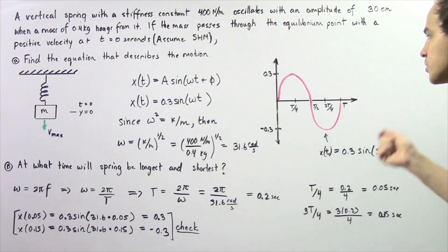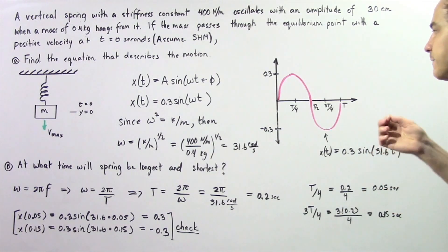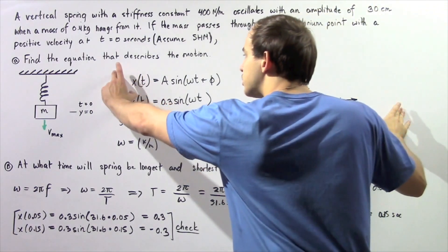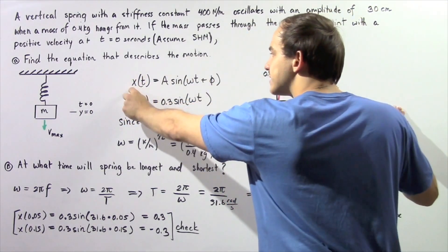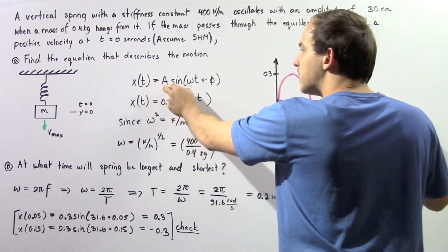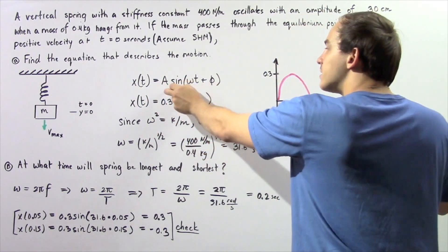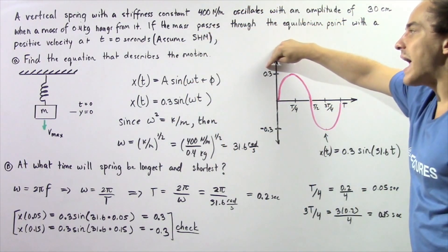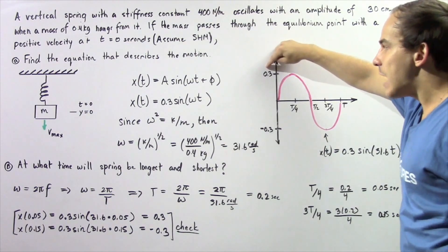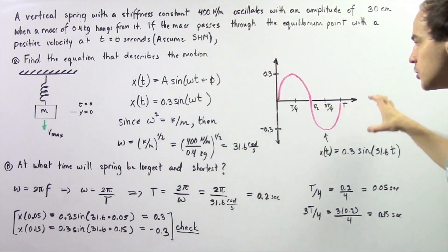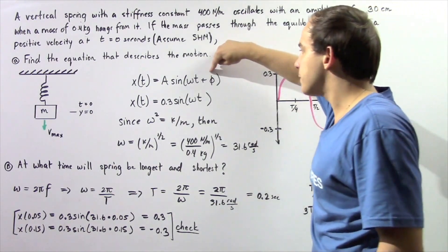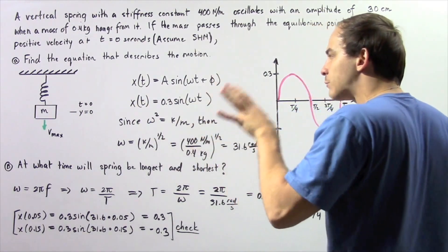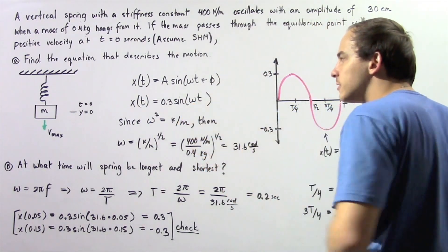The graph looks like a sine function multiplied by 0.3. We're looking for the equation: x(t) = A × sine(ωt + φ), where A is simply our amplitude, the maximum displacement. Notice our sine function begins at the origin, so our phase angle φ is 0. So all that remains is to solve for our angular frequency ω.